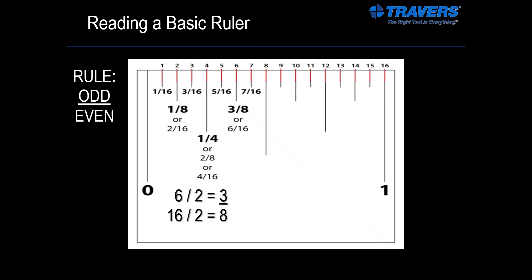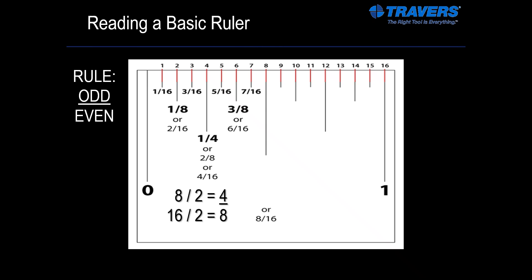Then the next line is the eight, so we have eight sixteenths. We're going to do the math: eight divided by two is four, sixteen divided by two is eight. Four eighths is still two even numbers, so we can't stop there. We have to keep going and break it down again. Four over eight divided by two gives us two over four — still no good, still two even numbers. Then we take two over four, divide by two, and we have one over two. That is finally odd over even. And the way you would say one over two is one half.